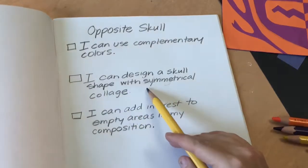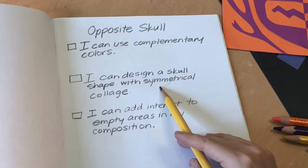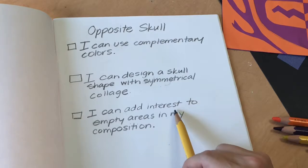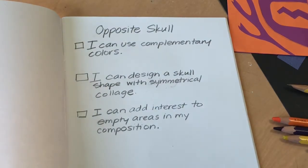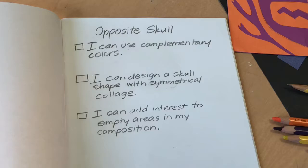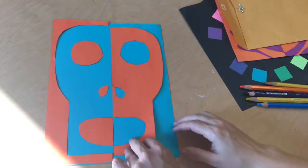Hello students, we're going to work on our opposite skull again today and I'm taking a quick look at the criteria. I want to see if you can use complementary colors, design a skull shape with symmetrical collage, and then add interest to any empty areas for your composition.